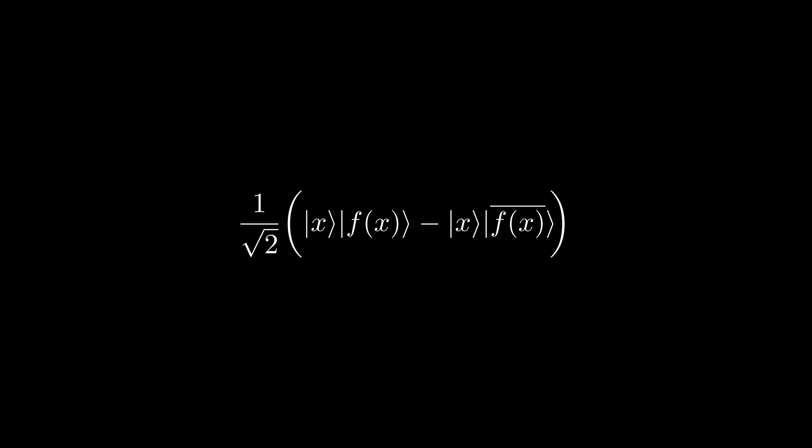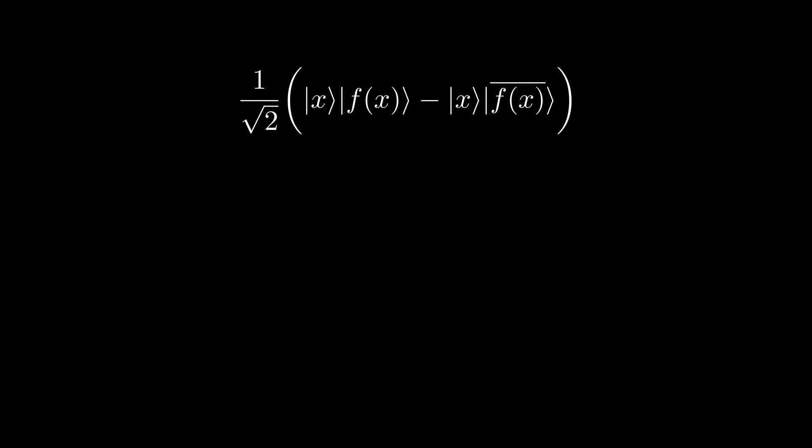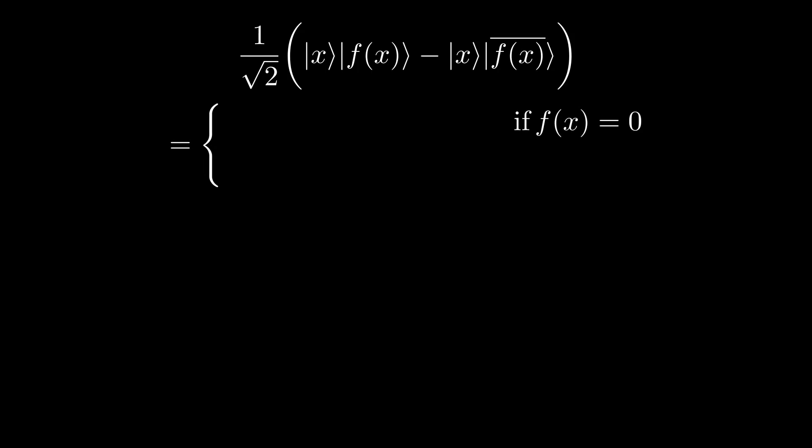Now let's consider two scenarios. If f of x is equal to 0, then the state becomes 1 over root 2 times x 0 minus x 1, which we can rewrite as x minus.